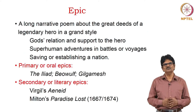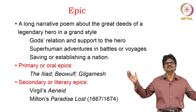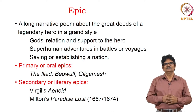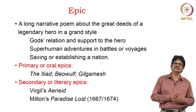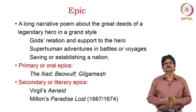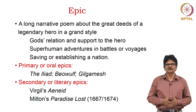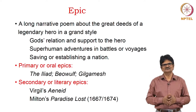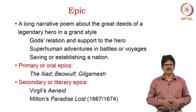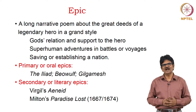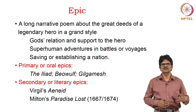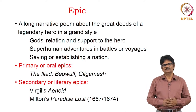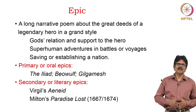Now we come to the epic form. It's a long narrative poem about the great deeds of a legendary hero in a grand style. It deals with gods and goddesses and heroes. Gods may support some and may oppose others. All kinds of superhuman adventures in battles and voyages we have in epics. It ultimately deals with something to do with saving, protecting or establishing a nation. We have two kinds of epic: one is called primary or oral epics — well-known examples include the Iliad, Beowulf, Gilgamesh — and the second kind, literary epics, includes Virgil's Aeneid and Milton's Paradise Lost.